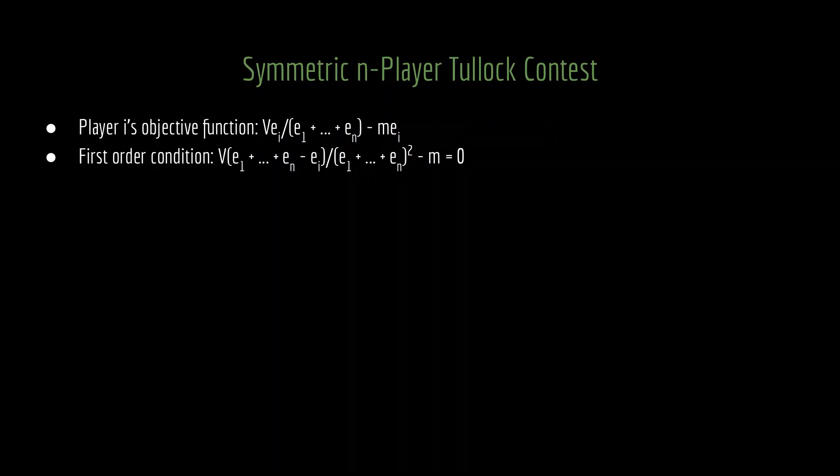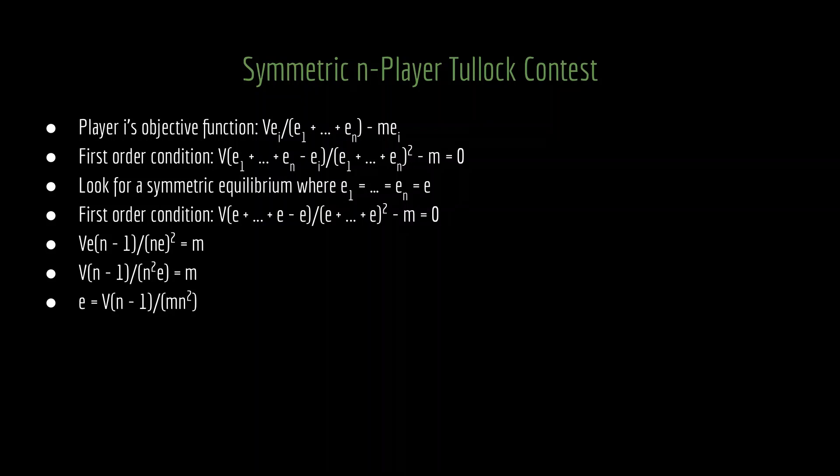Ordinarily, what we would do next is solve for e_i. However, because we are looking at a symmetric game, it stands to reason that we can look for a symmetric equilibrium. So rather than thinking about this as solving for i's optimal effort level, if each of the groups, or each of the players, is selecting the same amount of effort, then instead of having a bunch of different e subscript values, we can have a single e value. That is, we can look for a symmetric equilibrium where e1 is equal to e2, which is equal to e3, which is equal to all the way to en, which we're just going to simply call e.